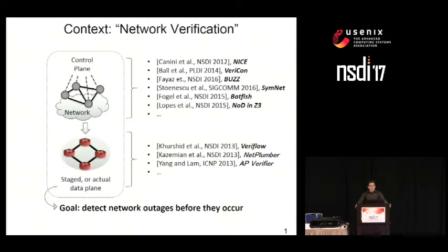Broadly speaking, the goal of network verification is to detect network outages before they occur, or at least before these errors manifest themselves. To do so, the analysis focuses either on the control plane or the data plane. Techniques for the former include tools such as BUS, BATFISH, and NOD — the top half of these slides — whereas notable data plane checkers are Veriflow, NetPlumber, and APVerifier.